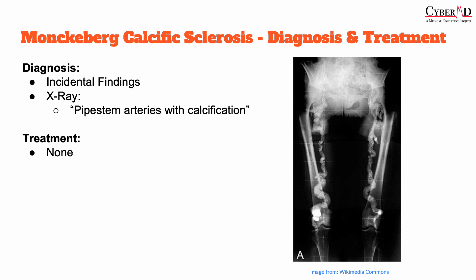If you are tested on this, it's likely that they will give you imaging like this and expect you to know the diagnosis simply by looking at it. It's important to differentiate Monckberg's from atherosclerosis, as they have distinct pathological features: atherosclerosis affects the intima of the arteries, while Monckberg's calcific sclerosis involves the media.